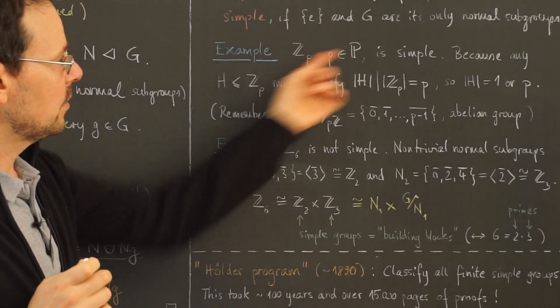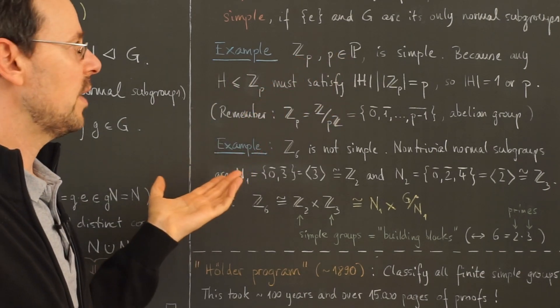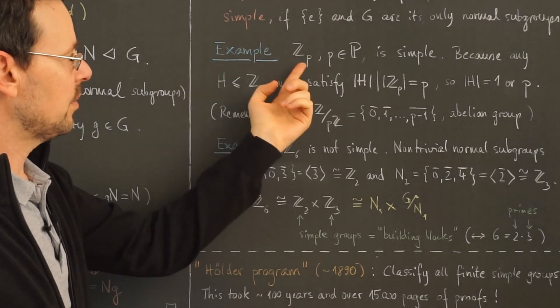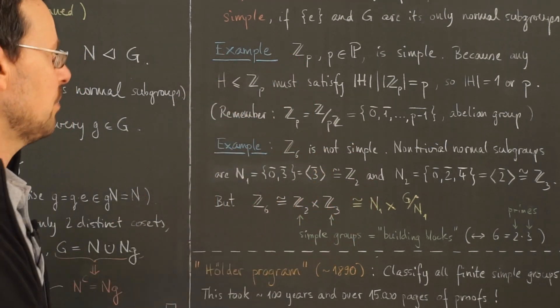So since there are infinitely many different prime numbers, this here, this example contains an infinite list of simple groups.